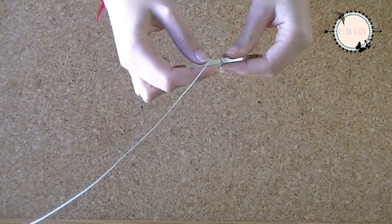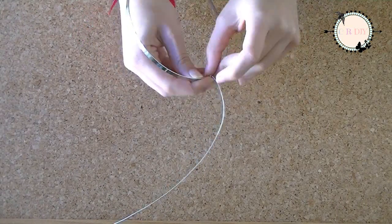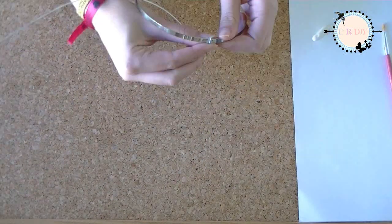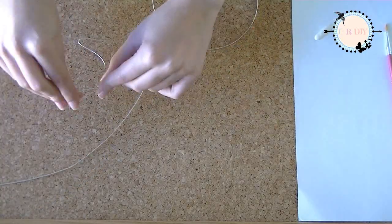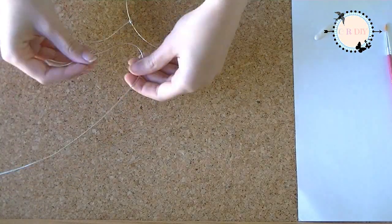I started rolling the wire around the headband to secure it. And then, you can start molding the wire to form the reindeer antlers.